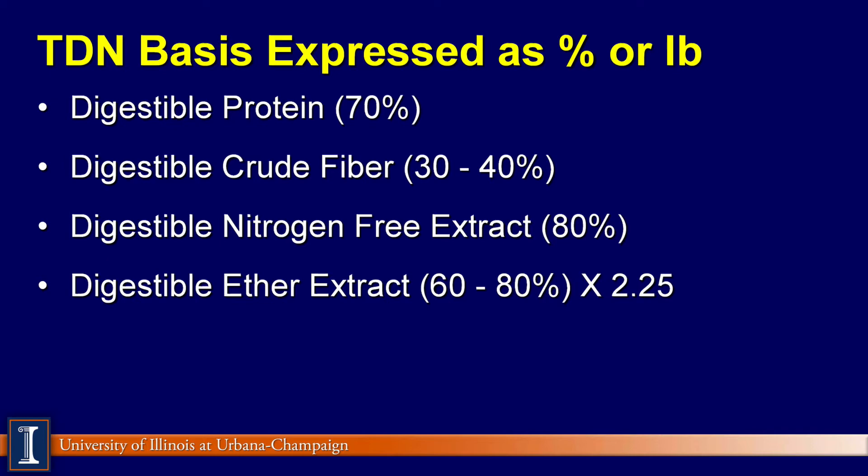Next, digestible nitrogen-free extract — that's about 80% digestible. For some of us that's an unusual term; nitrogen-free extract really is sugars and starches, so it's very highly digestible — pigs, chickens, and humans handle this very nicely. The fourth component is digestible ether extract, which is your fats and oils, at a fairly high 60% to 80%. Note that it is multiplied by 2.25%, because fat is two and a quarter times more calorically dense based on its carbon content.